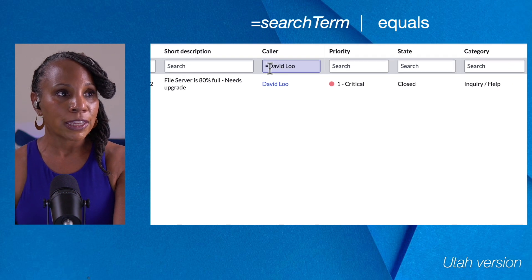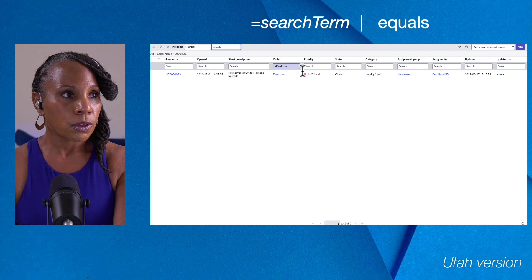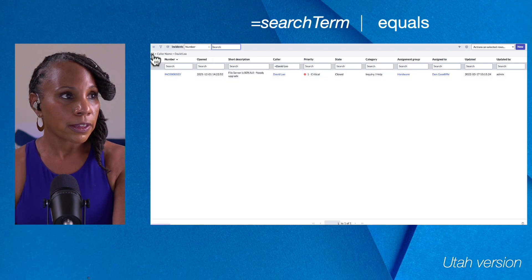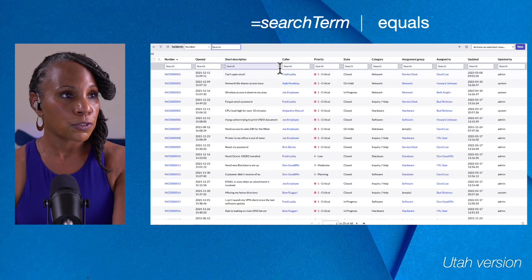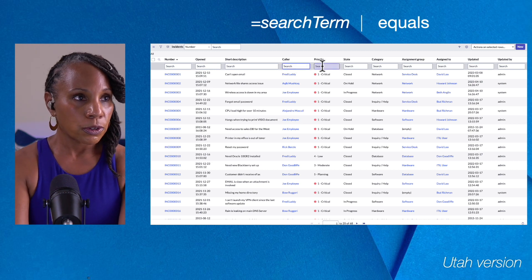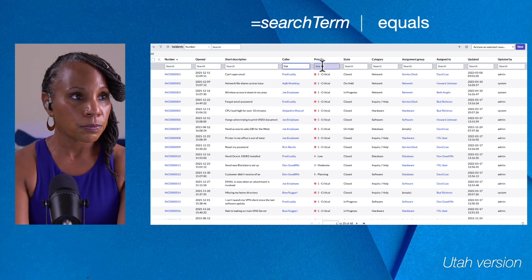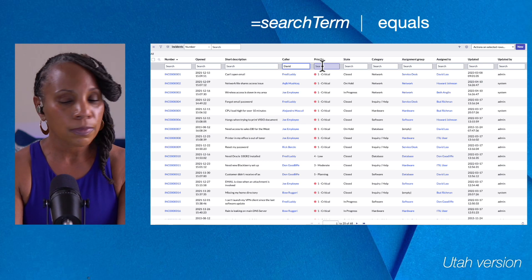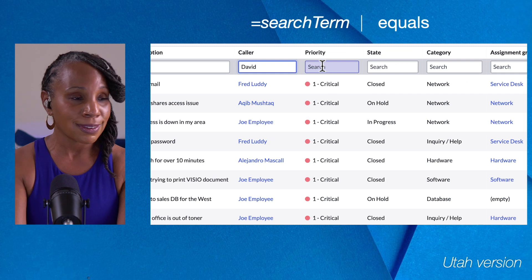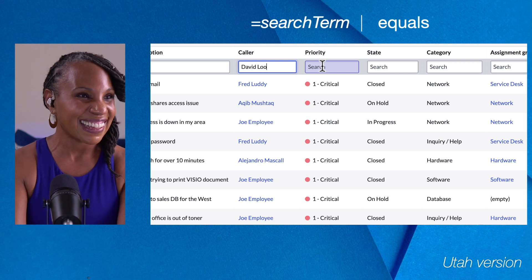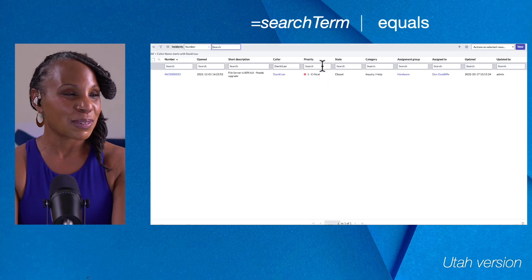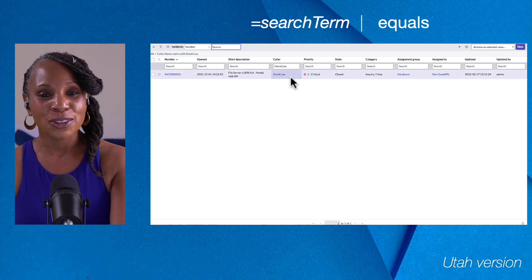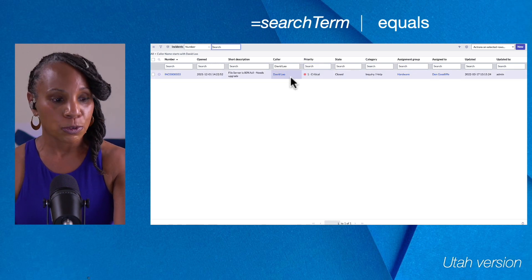You really don't need the equal sign to get the same results. I'll select 'All' to get the full list, go back to the Caller search window, and put in 'David Liu' without the equal sign. Let's zoom in — and as you see, we still get the same results whether we use the equal sign or not.